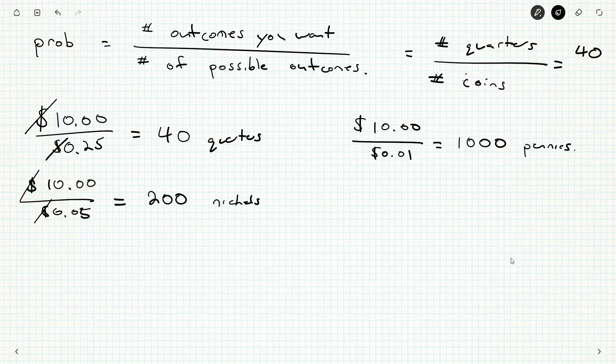So the total number of coins is going to just be 40 plus 200 plus 1,000. And our probability becomes 40, the number of quarters, the number of outcomes that we do want, over the total number of coins, 40 plus 200 plus 1,000. So we can simplify this a little bit. Without the calculator, I can certainly get rid of those zeros there. 4 out of 124.